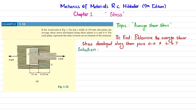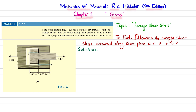Welcome back. In this video we are going to solve example 1.10, taken from chapter 1 on Stress in the book Mechanics of Materials by R.C. Hibbeler, 9th edition. The topic is average shearing stress.